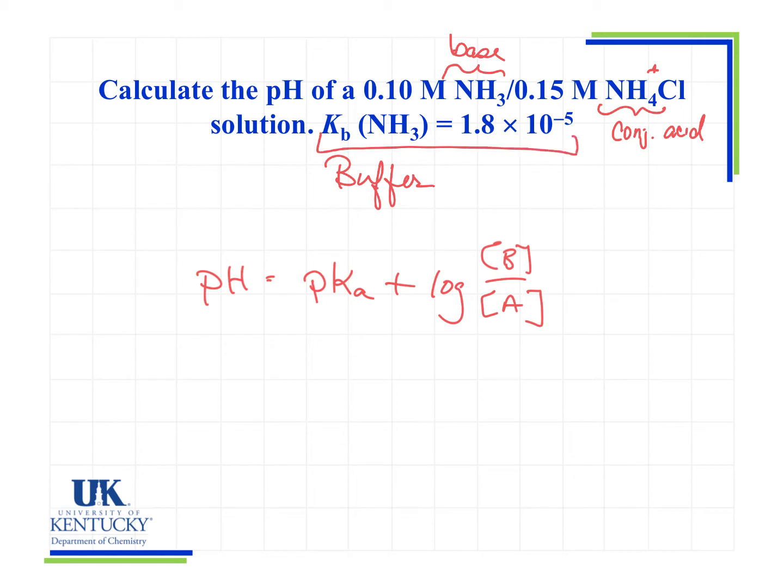I see here that they gave me the Kb. So how do we get the pKa from the pKb? I mean, they gave me the Kb, and I'll need the Ka so I can get the pKa. So how do I get the Ka? We know that the Ka is Kw divided by Kb. Kw is 1 times 10 to the minus 14 divided by 1.8 times 10 to the minus 5. And that will give me 9.55 times 10 to the minus 10.